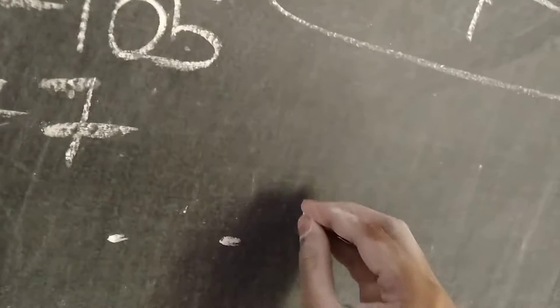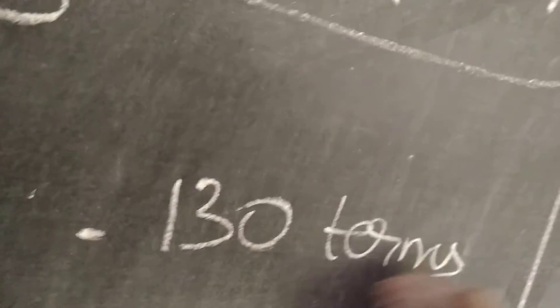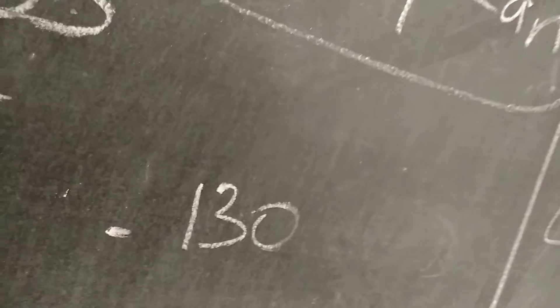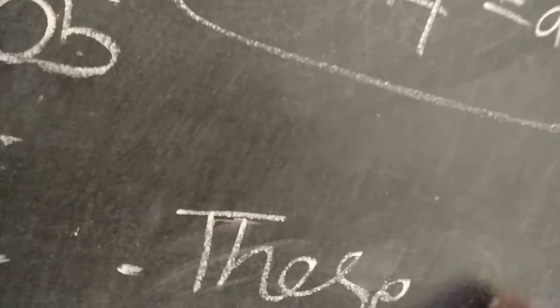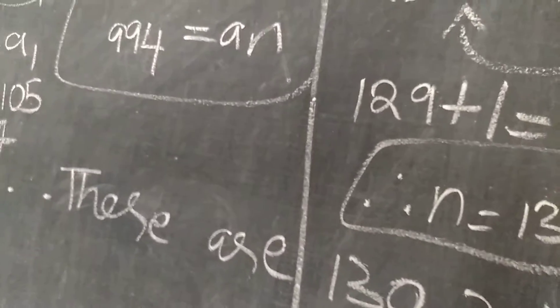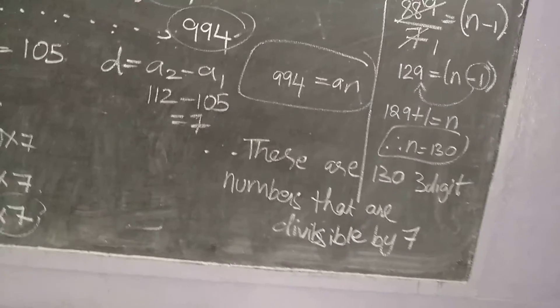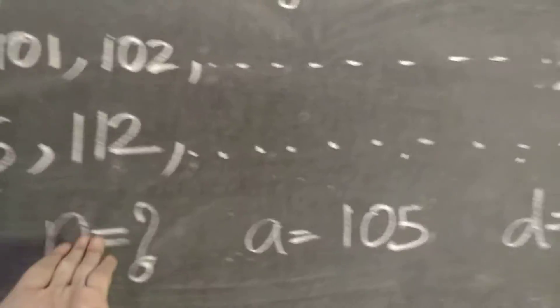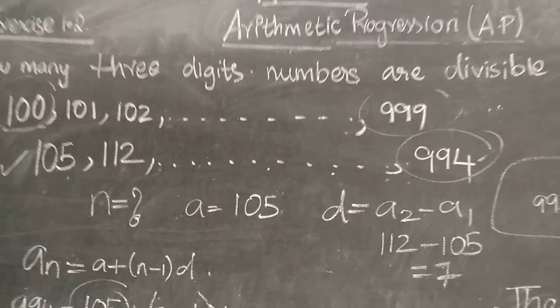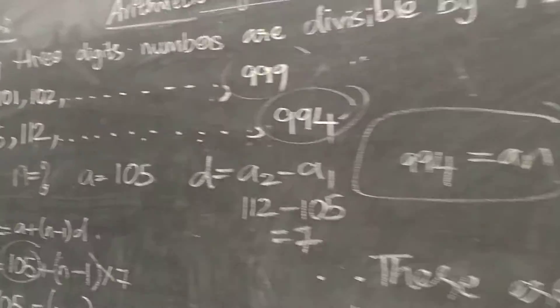So 129 = n − 1. Shift the minus 1: 129 + 1 = n, therefore n = 130. So conclude your answer: there are 130 three-digit numbers that are divisible by 7. Totally 130 three-digit numbers — 105, 112, 119, and so on — are divisible by 7.